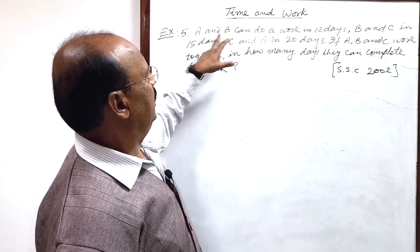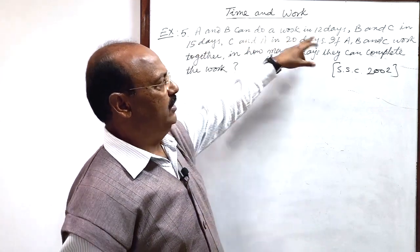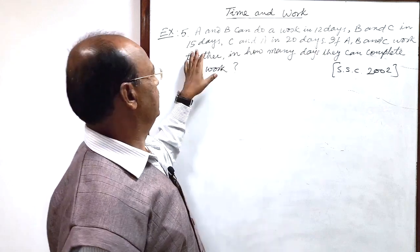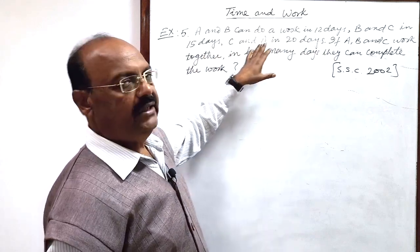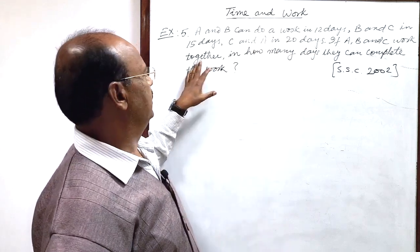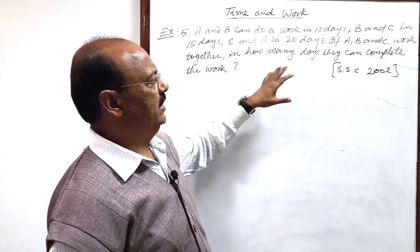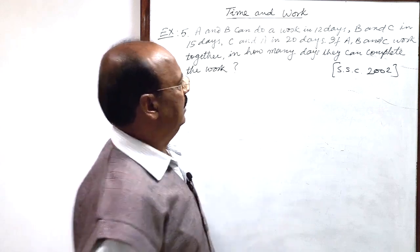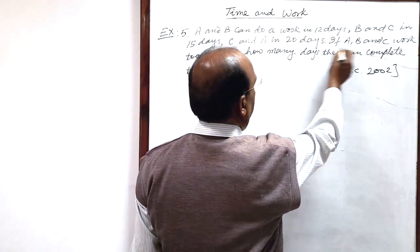Here the question is: A and B can do a work in 12 days, B and C in 15 days, C and A in 20 days. If A, B and C work together, in how many days can they complete the work?